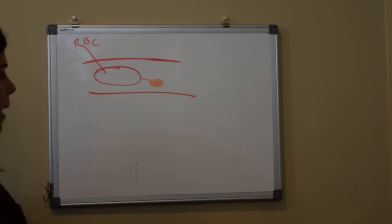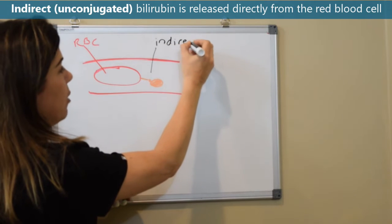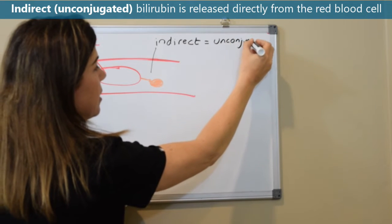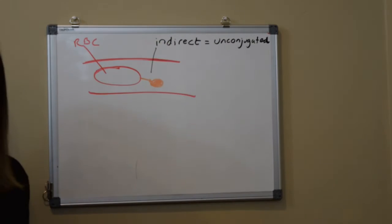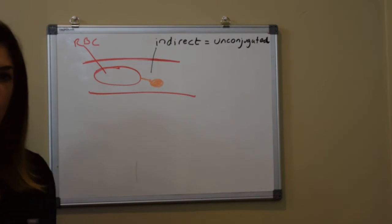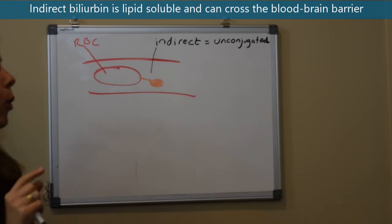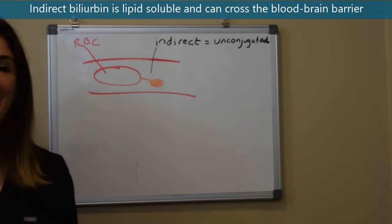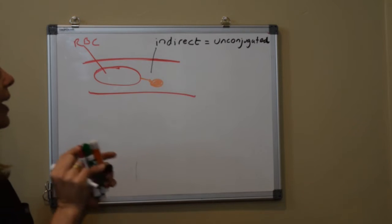This type of bilirubin that is released directly from the red blood cell and this is very important for you to understand is called indirect bilirubin or unconjugated. You'll understand more later why that's called unconjugated or indirect bilirubin.